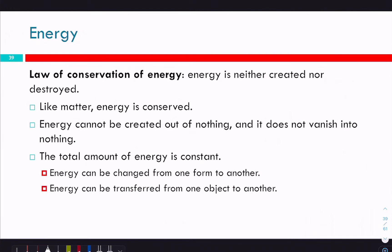We have the law of conservation of mass and the law of conservation of energy — energy is neither created nor destroyed. Even if you slap a table, the kinetic energy gets turned into thermal energy. You can't get energy from nothing — that's why all perpetual motion machines are always a scam. The total amount of energy is constant; you can change it from one form into another.